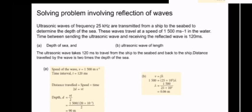The depth, d equal to vt over 2. Substitute the number in the formula, so the depth is 90 meters. For part b, v equal to f lambda. Substitute the number in the formula, so the answer is 0.06 meters.